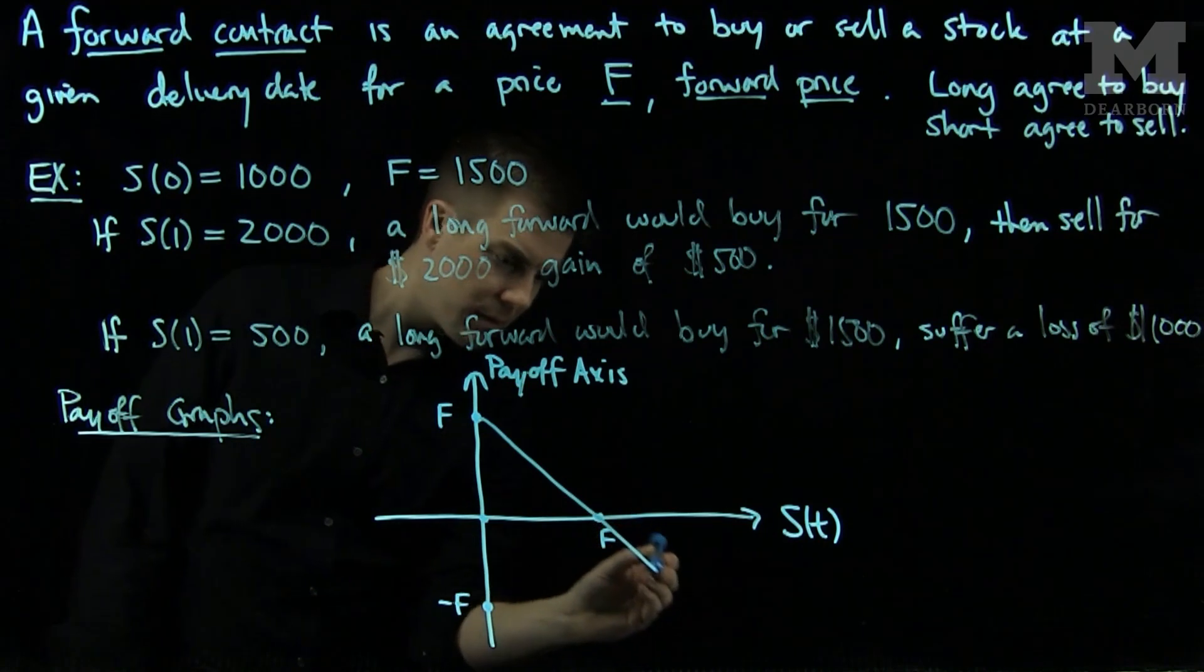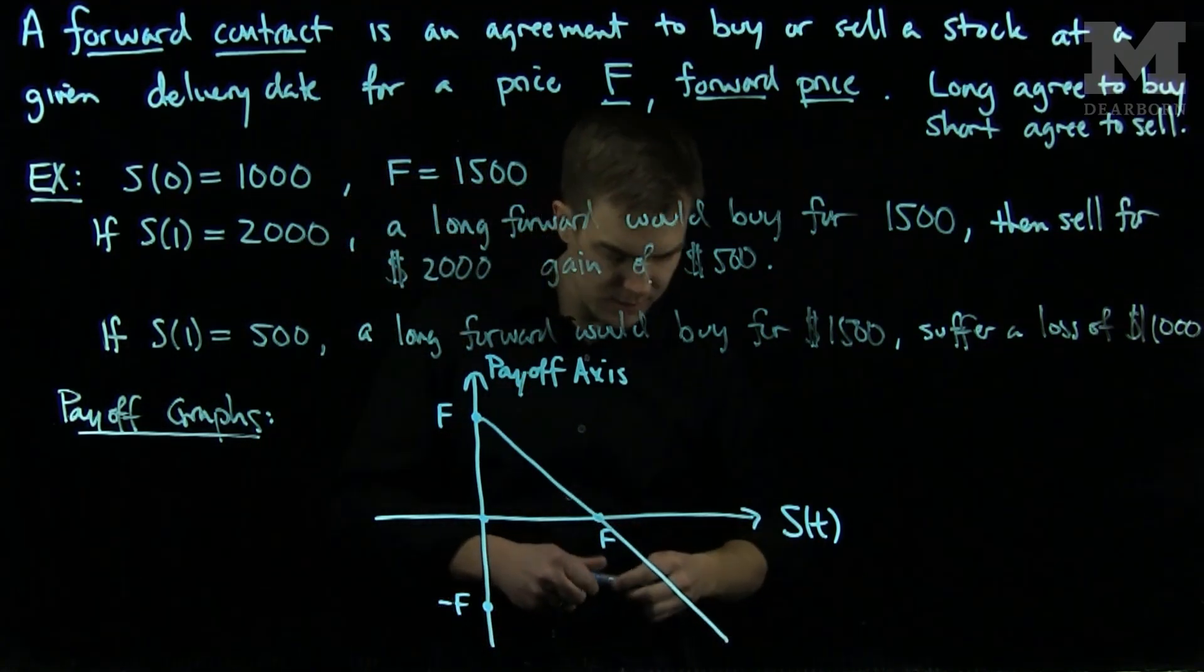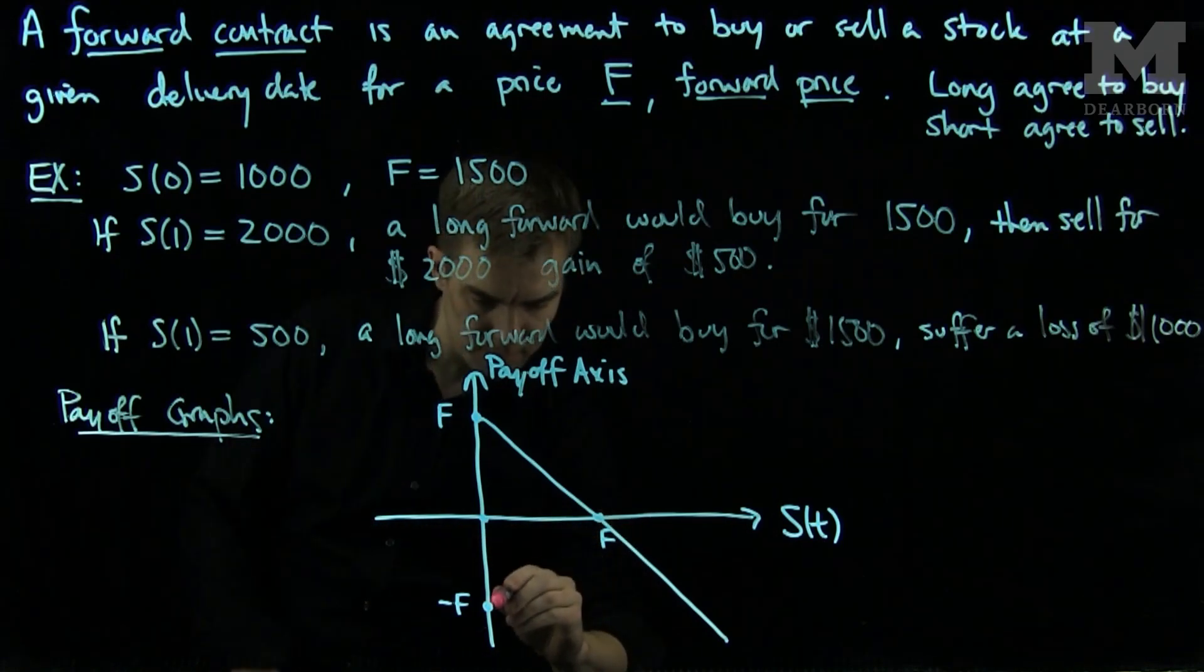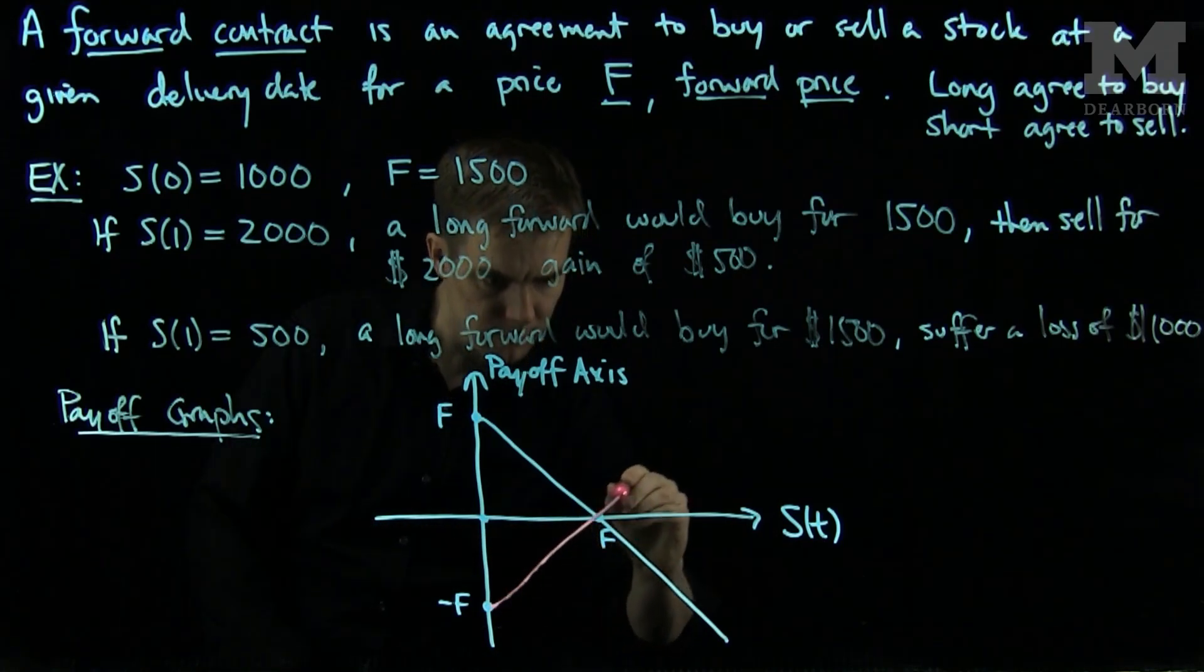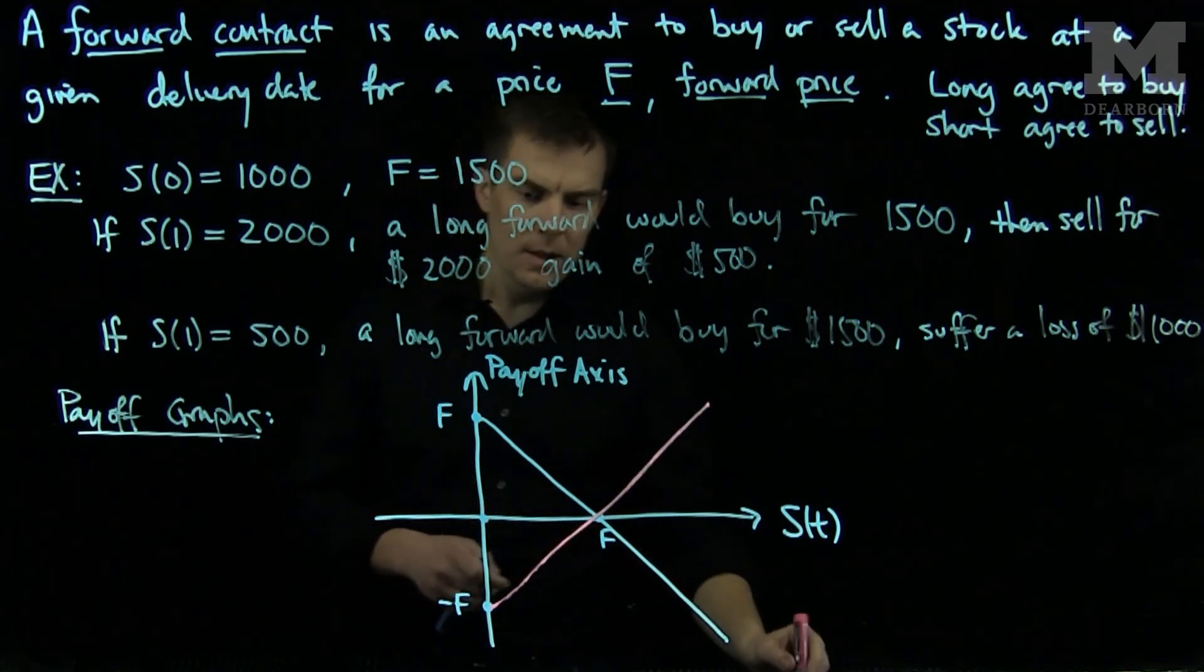Then we have two symmetric graphs. We have this downward sloping graph and we have this upward sloping graph.